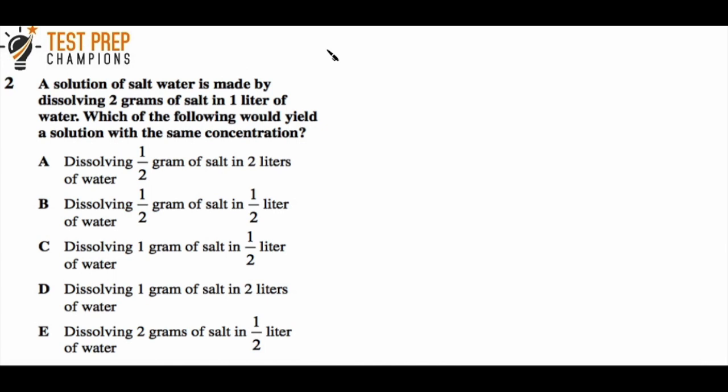A solution of salt water is made by dissolving two grams of salt in one liter of water. Which of the following would yield a solution with the same concentration? Pause the video and try this out. To get this question right, we need to pay attention to the ratio of grams to liters. G means grams and L stands for liters.